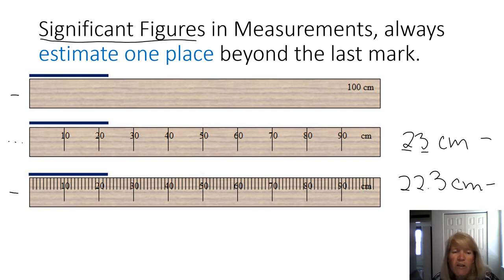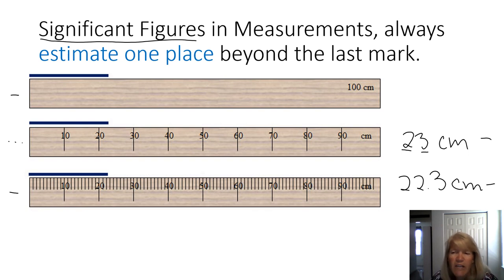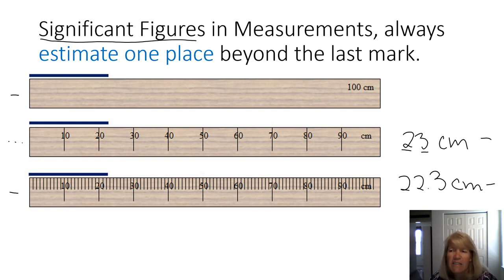You always want to record the best measurement you can based on that device — in this case the final ruler gives us 22.3. Now would somebody else maybe call it 22.2? They might. That last number is an estimate; there's some error in it, but none of you are going to call it 22.8. So there's value in making that estimate even though it's not perfect.